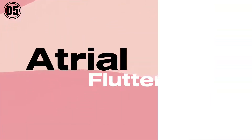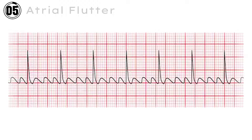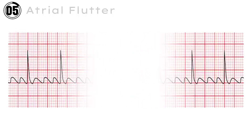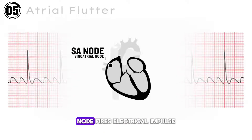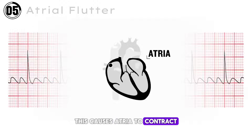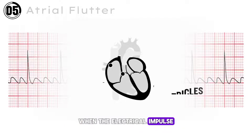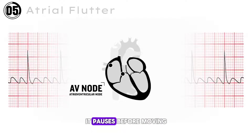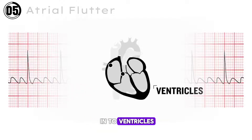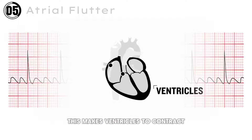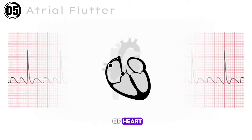ECG number 5: Atrial Flutter. A normal heartbeat begins when the sinus node fires an electrical impulse, causing the atria to contract and forcing blood into the ventricles. When the electrical impulse reaches the AV node, it pauses before moving into the ventricles, making the ventricles contract and forcing blood out of the heart to circulate around the body.